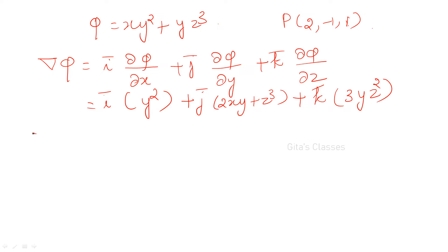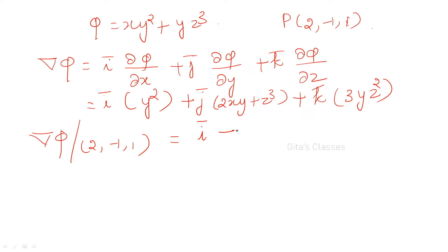Now we have del phi, but we need del phi at the point (2, -1, 1). Substitute x = 2, y = -1, z = 1. So we get i into (-1)² = i, then j into (2·2·(-1) + 1) = -4 + 1 = -3j, then k into 3·(-1)·1² = -3k. So del phi at P equals i minus 3j minus 3k.